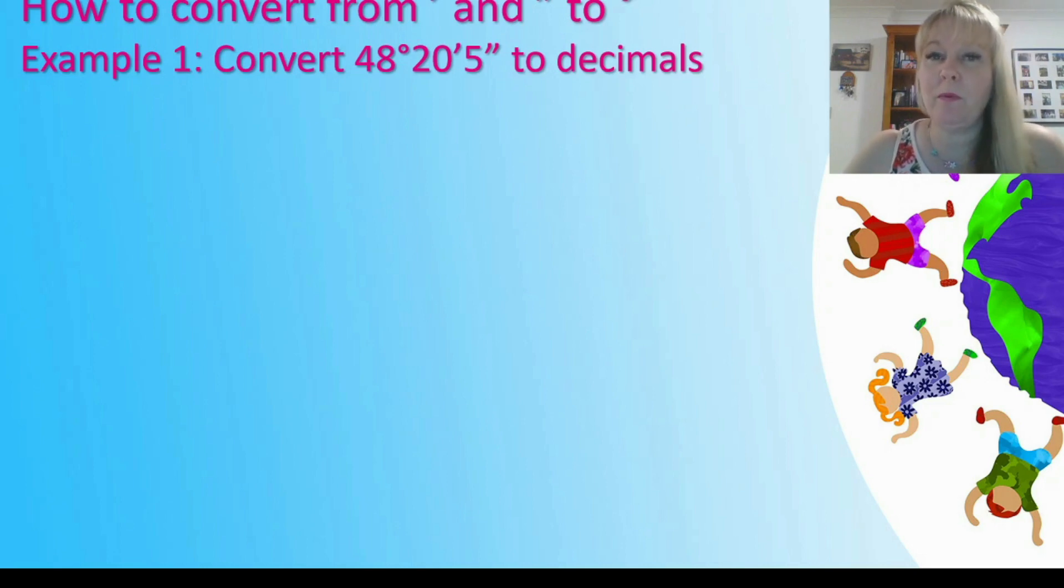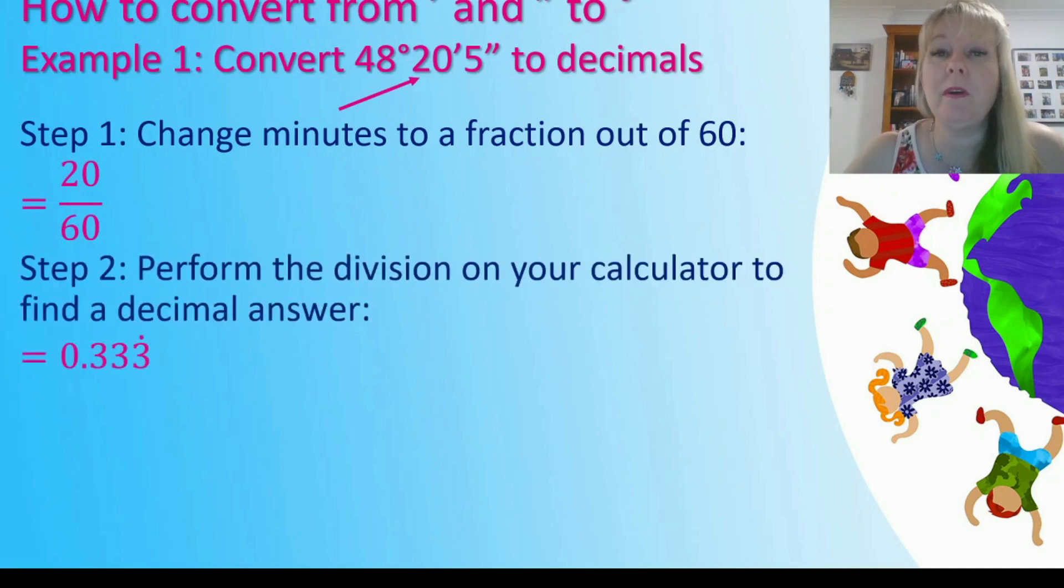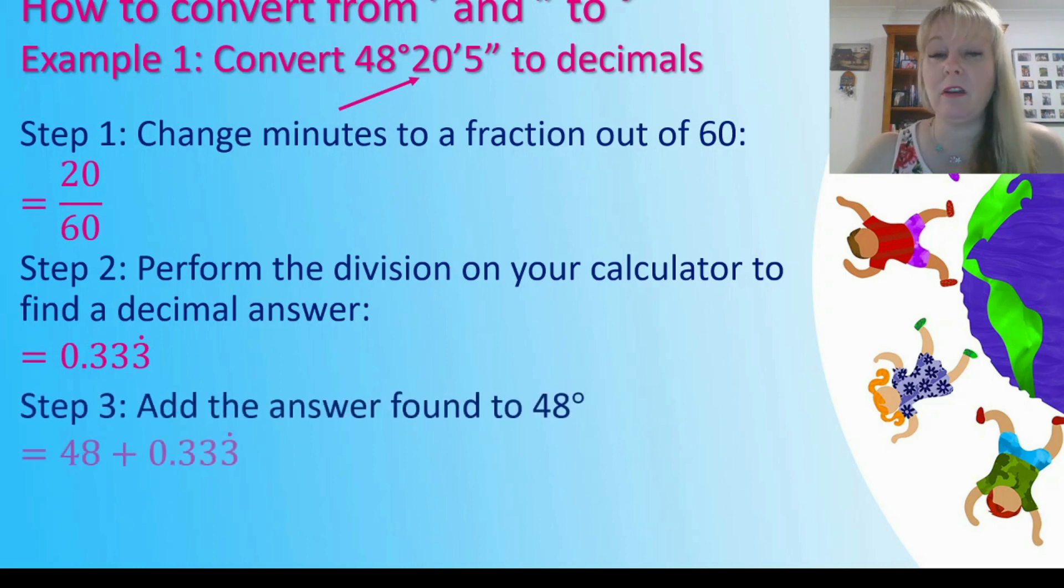So now let's do a worked example together. We're going to convert 48 degrees 20 minutes and 5 seconds into decimals. First we focus on the minutes. We change that into a fraction out of 60. So 20 divided by 60. If you do that on your calculator the answer will be 0.333 repeating because it's a third. We add the 48 degrees to the 0.333 and we end up with 48.33 degrees. So we're halfway there.